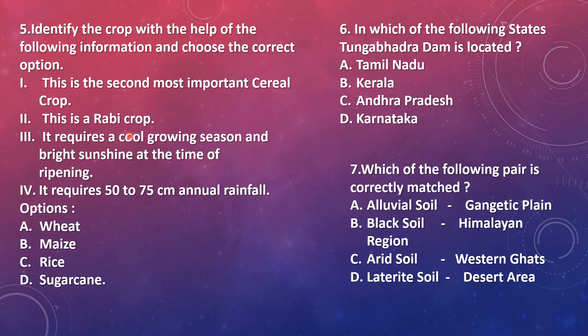They have already mentioned it is a Rabi crop, so from this we can find the answer quickly — it will be wheat, because wheat is the Rabi crop. Maize, rice and sugarcane are Kharif crops grown from June to October. Our answer is wheat. I suggest you study which crops come under Rabi and Kharif — it will make it easy to answer in exams.